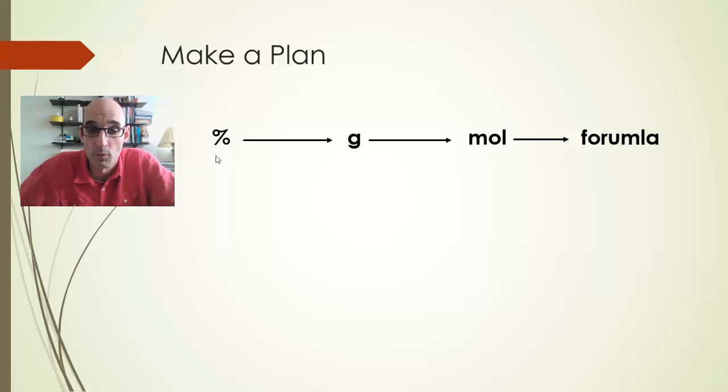Without further ado, after an elemental analysis of an unknown compound, it is determined to contain 50% carbon, 5.61% hydrogen, and 44.4% oxygen. What is the empirical formula of this unknown compound? We've got percentages. We need to get a formula.